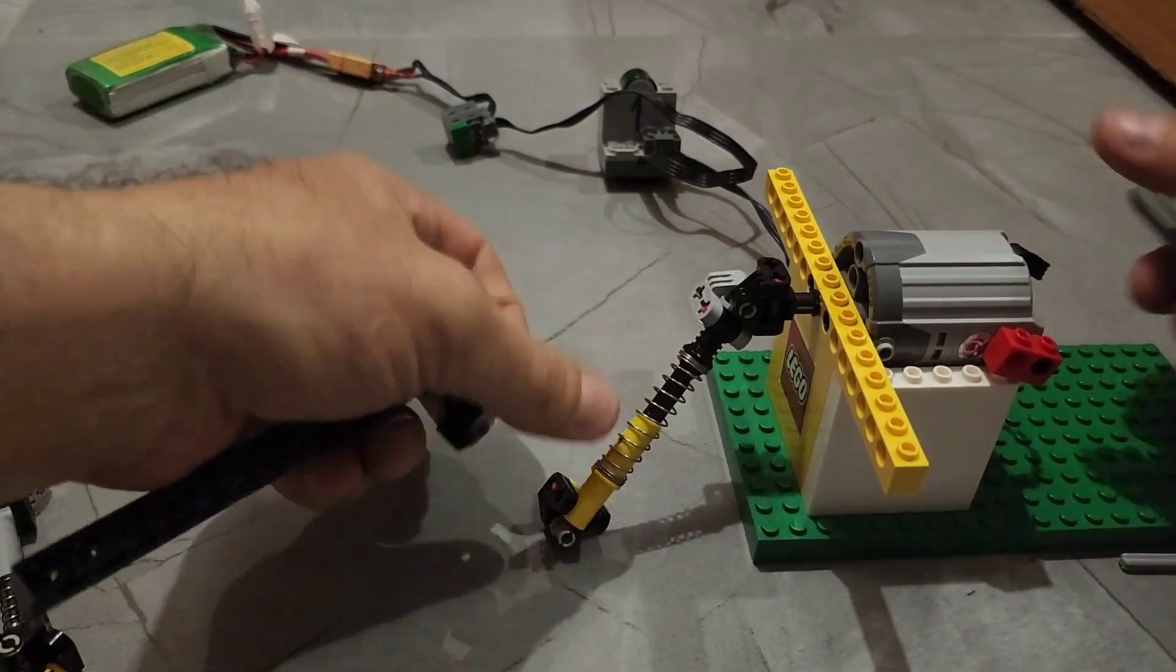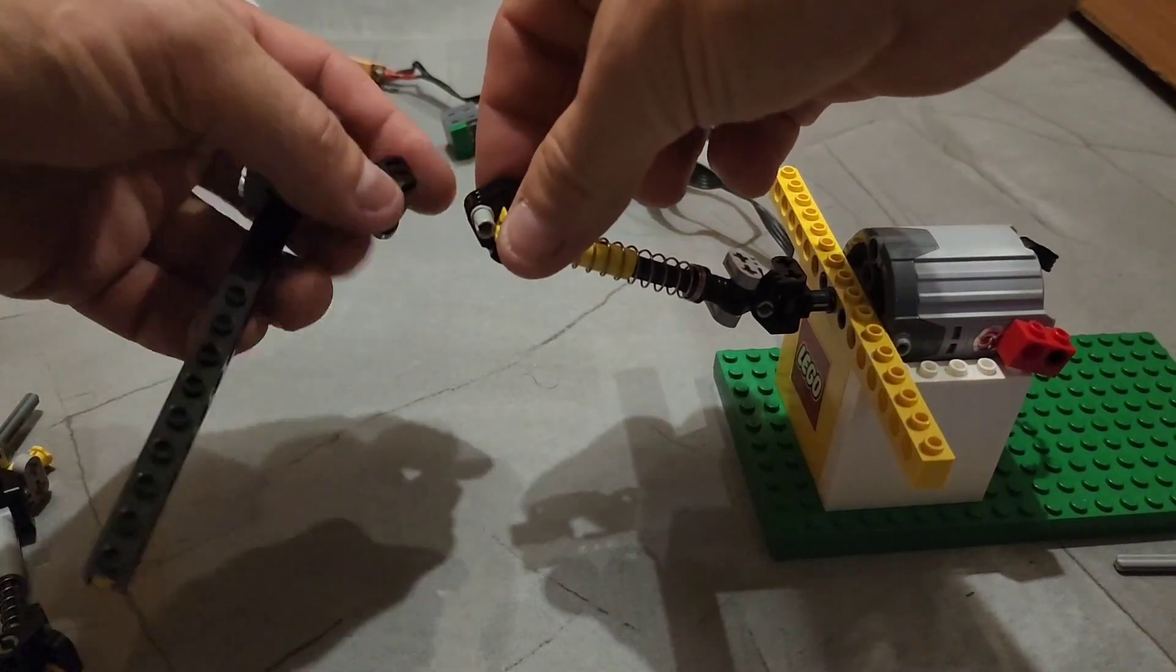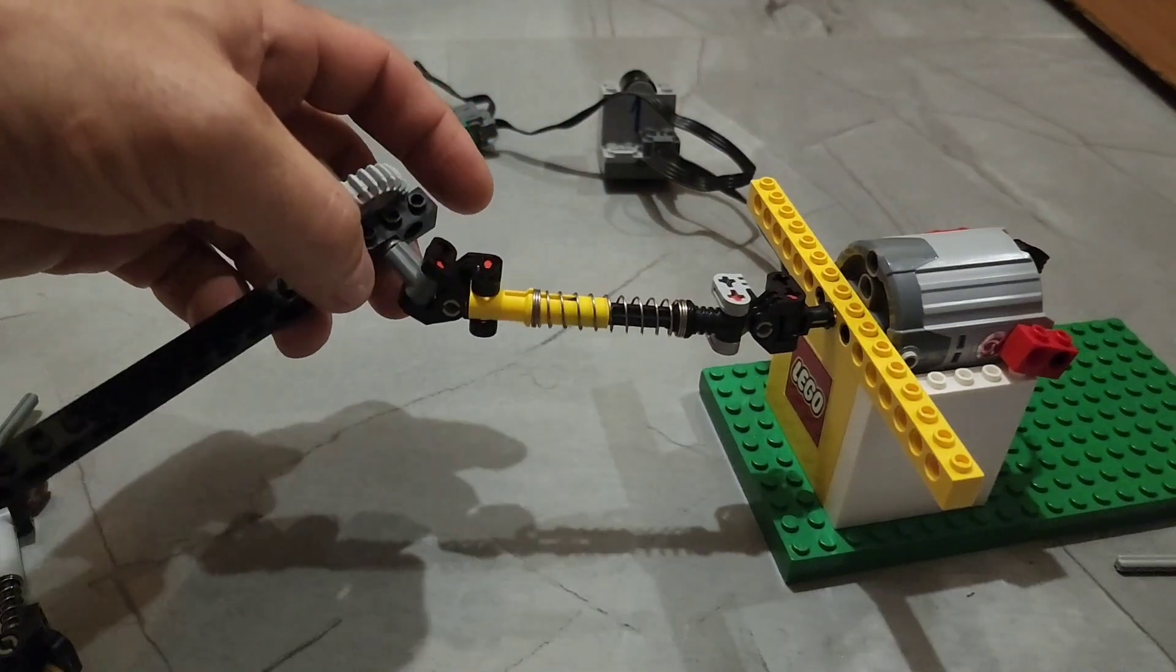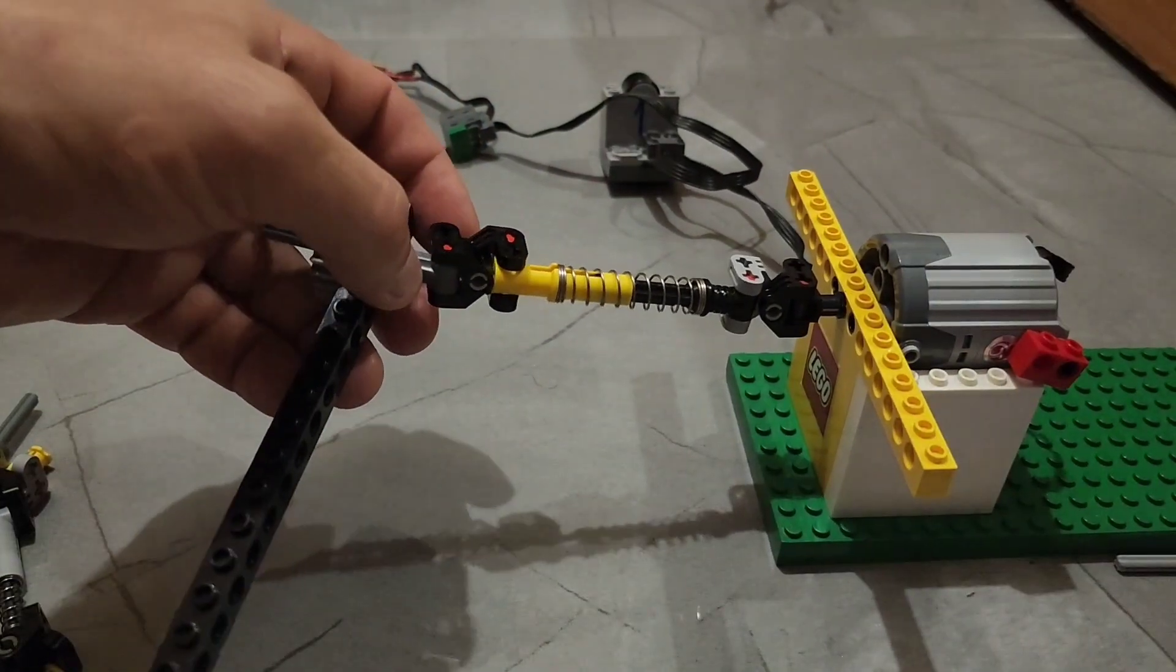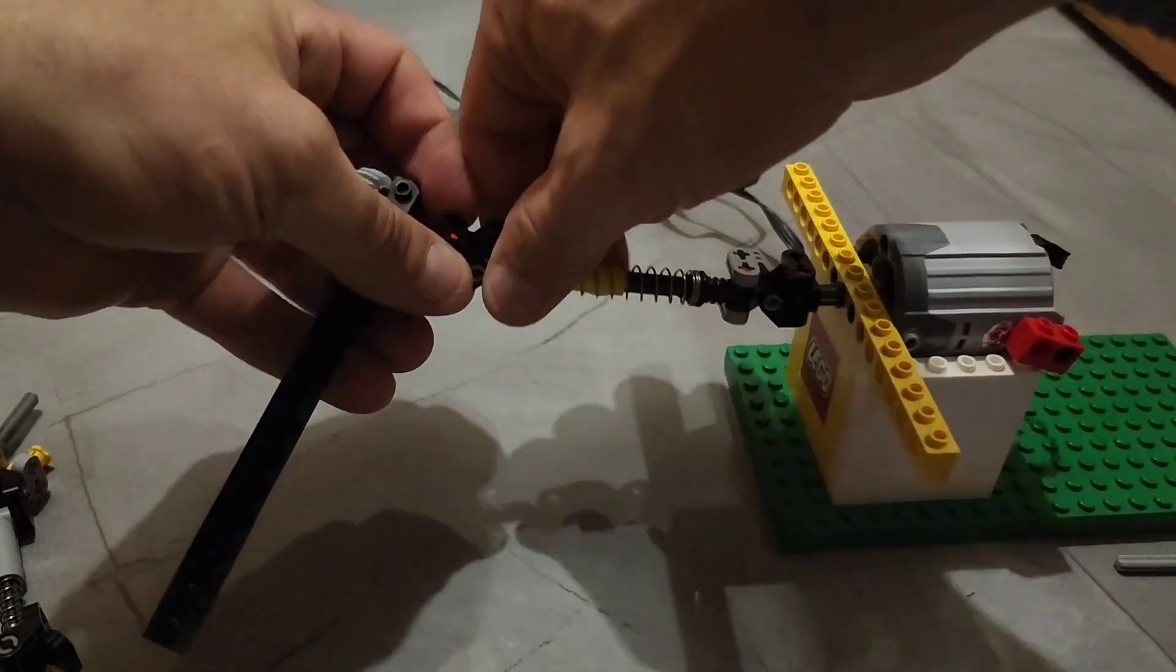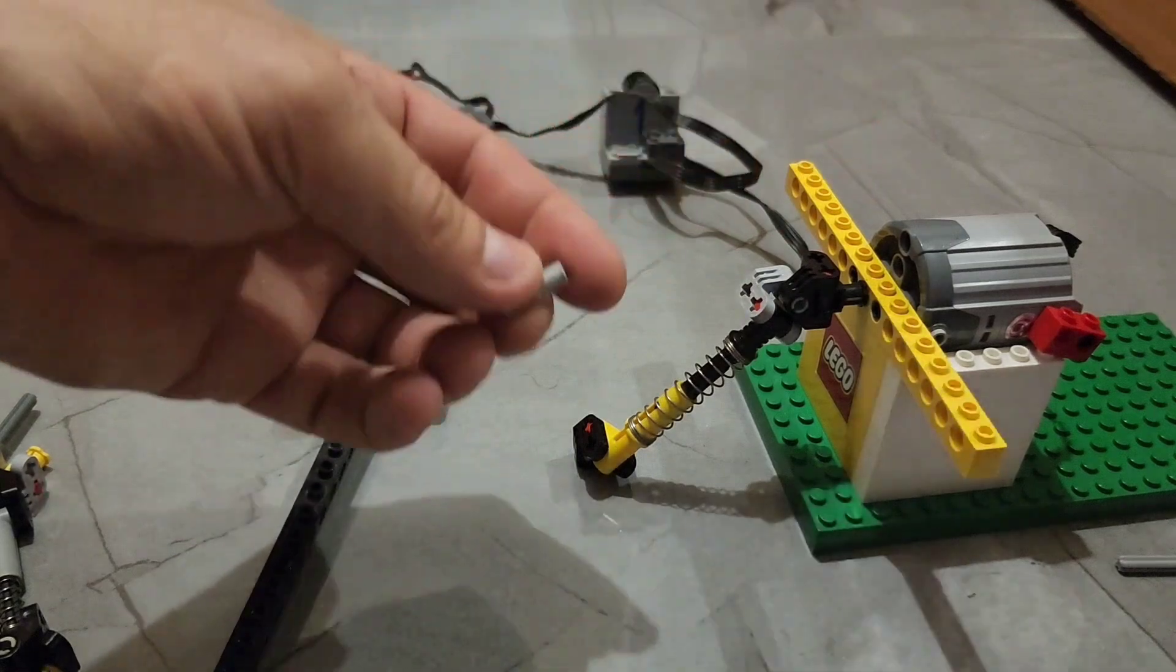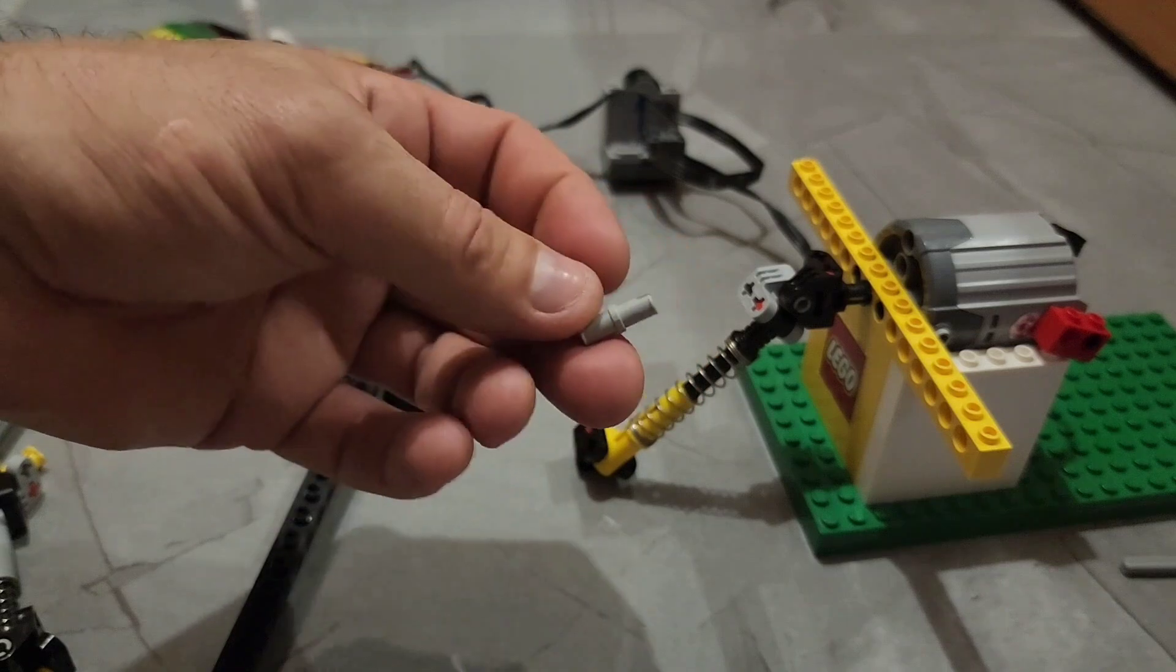Okay, worst case scenario happened. And what happened? Just this is disconnected, and we can connect it again. That's it. You can do it on the field inside your MOC—you don't need to take apart half of it. In the worst case scenario, this pin can be broken as well, but it's very easy to replace it. And again, you don't need to take apart half of your car or MOC for that.